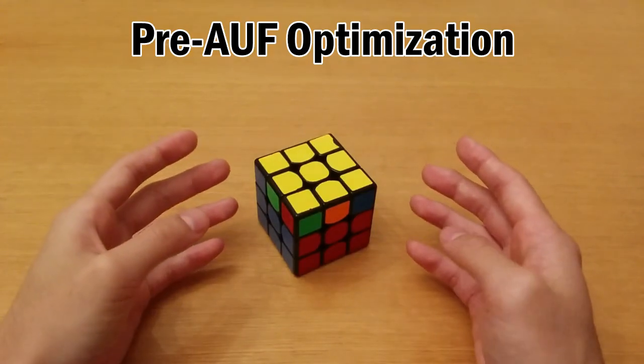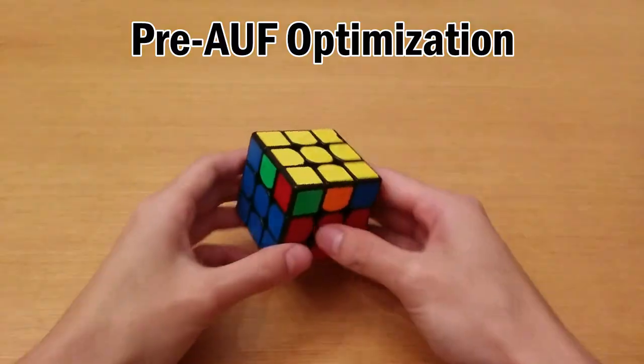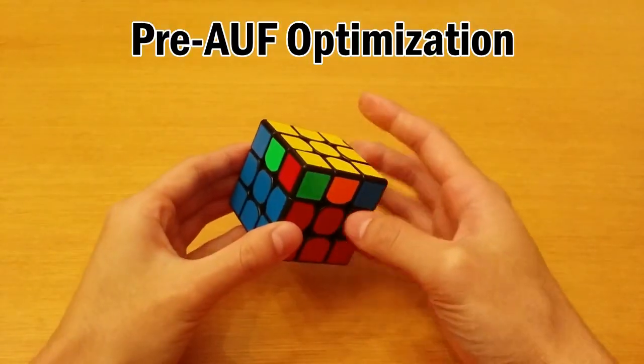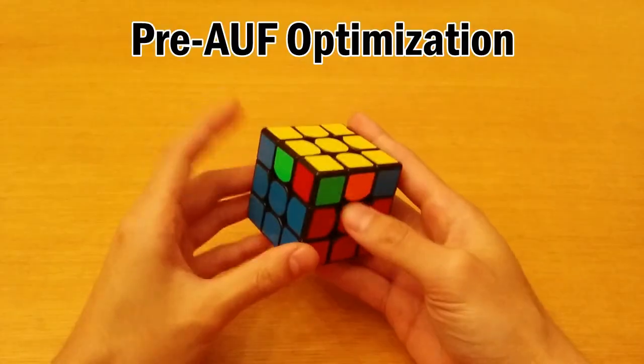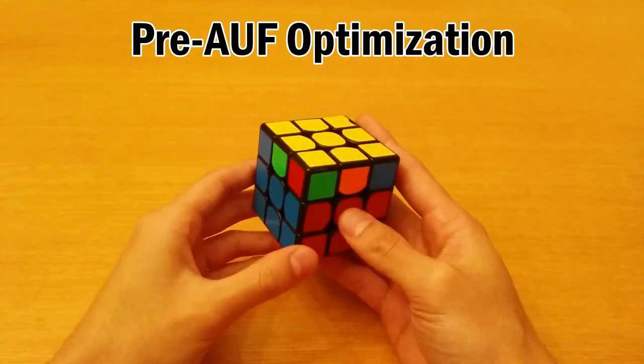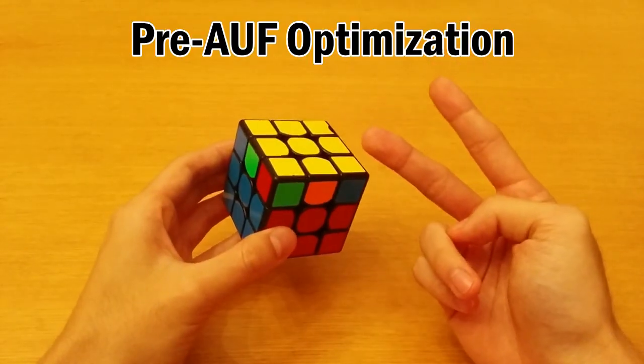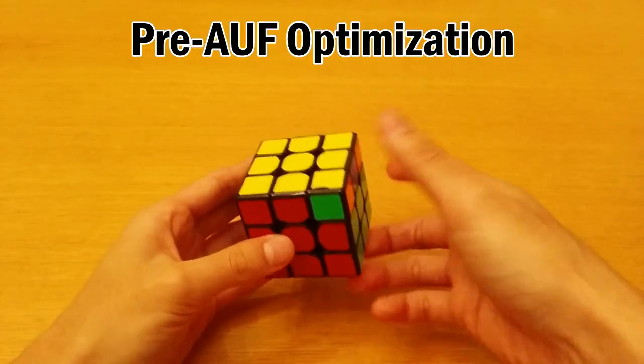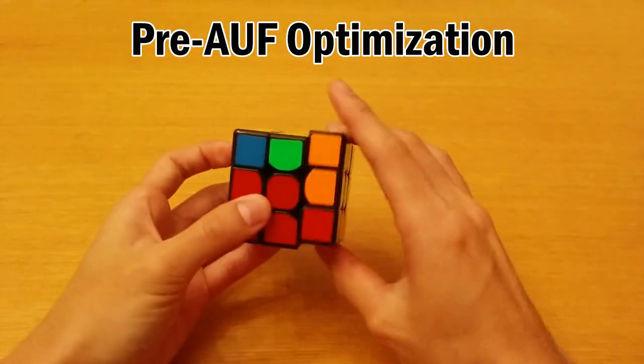If you can do two-side PLL recognition then you can do a little bit more optimization on your AUFs before you do PLL. This is a little bit more advanced but let me show you what I mean. This is a G-perm and there's a block over here so if you recognize it from this side you see it's a G-perm and what you want to do is if you have the two algs that I mentioned earlier and you want to know should you do a U AUF and then do this or should you do a U' AUF and then do this.